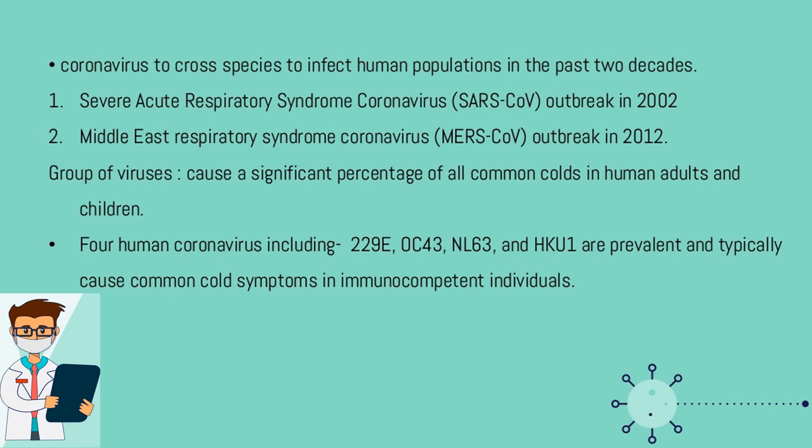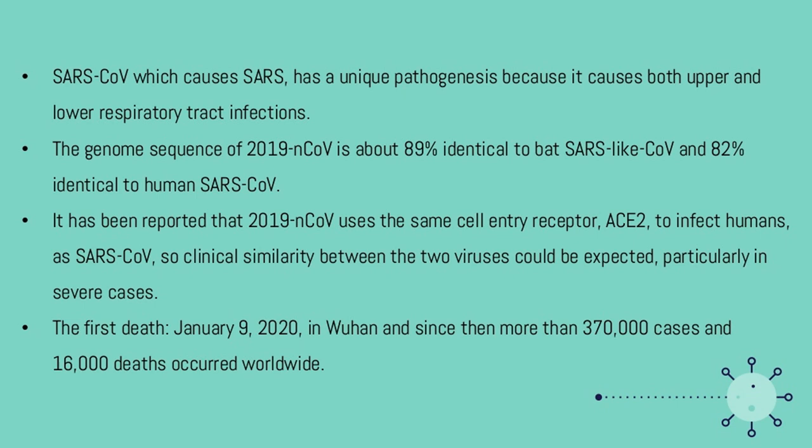Human coronaviruses including 229E, OC43, NL63, and HKU1 are prevalent and typically cause common cold symptoms in immunocompetent individuals. SARS-CoV, which causes SARS, has a unique pathogenesis because it causes both upper and lower respiratory tract infections. The genome sequence of 2019-nCoV is about 89% identical to bat SARS-like-CoV and 82% identical to human SARS-CoV.